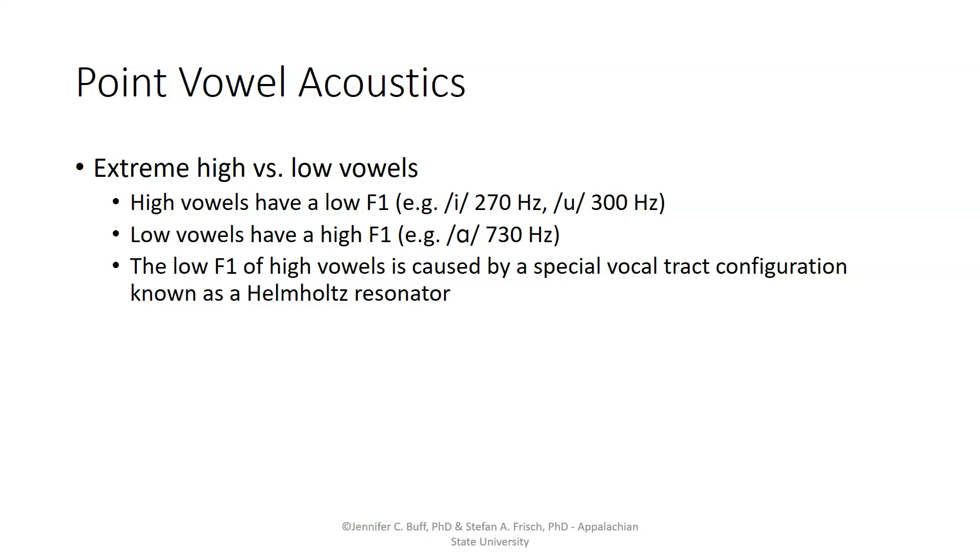When we move away from the neutral vowel and consider the point vowels, the first dimension we can look at is high versus low vowels. If one analyzes the acoustics of recordings of people producing these vowels, we find that high vowels will have a low first formant. So, for example, for an /i/, something like 270 hertz. For an /u/, something like 300 hertz.